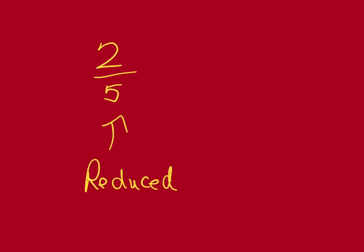Mixed numbers should also be reduced. A mixed number is a whole number with a fraction sitting next to it, like one and four-ninths. We look at four and nine — they do not share a gazinta, they do not have a common factor, so it is reduced.